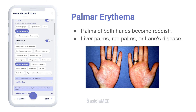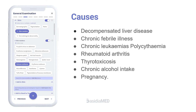Palmar erythema is a rare skin condition where the palms of both hands become reddish. It is also known as liver palms, red palms, or Lane's disease. Causes include decompensated liver disease, chronic febrile illness, chronic leukemias, polycythemia, rheumatoid arthritis, thyrotoxicosis, chronic alcohol intake, and may also be seen in physiological states like pregnancy.